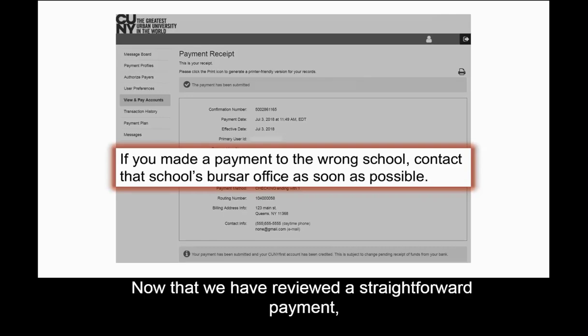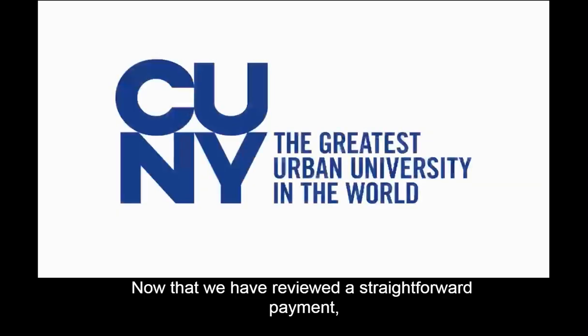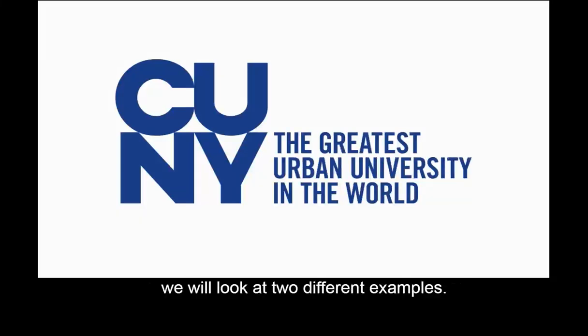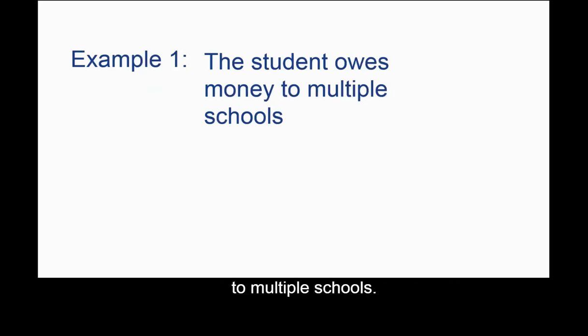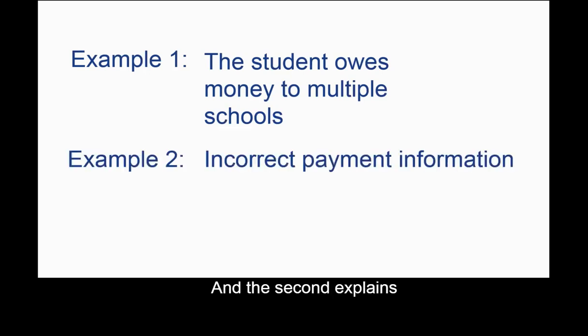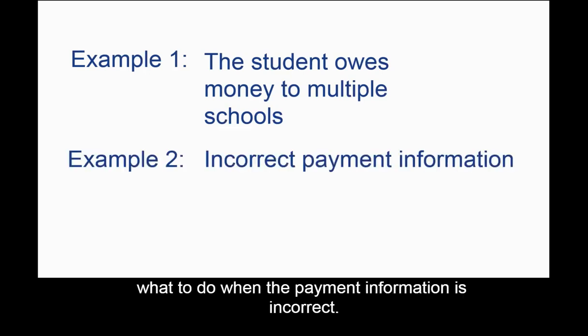Now that we have reviewed a straightforward payment, we will look at two different examples. The first example walks through a payment for a student who owes money to multiple schools, and the second explains what to do when the payment information is incorrect.